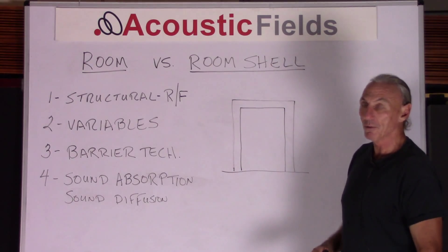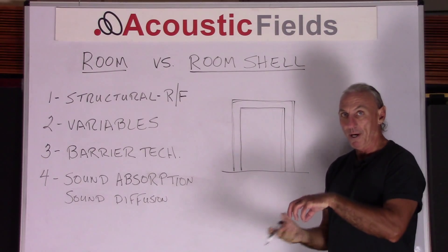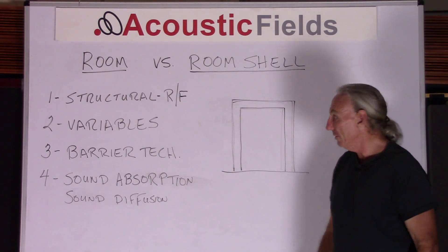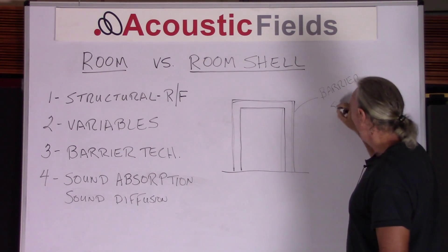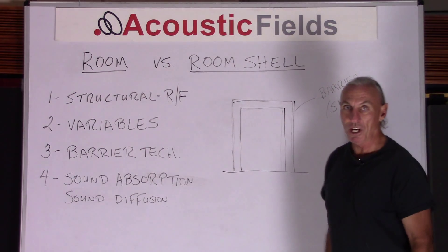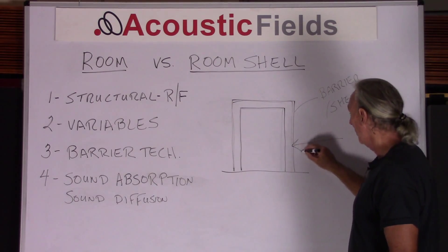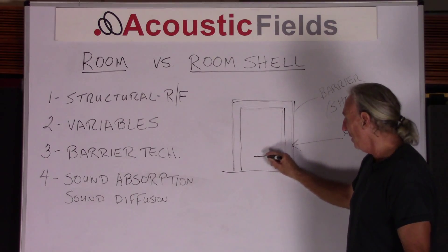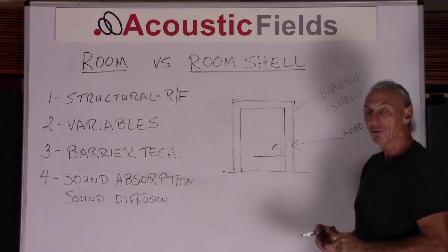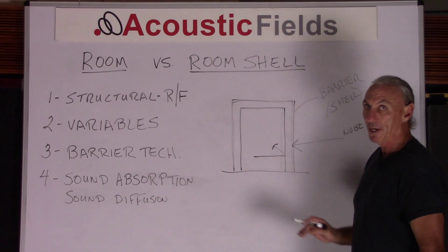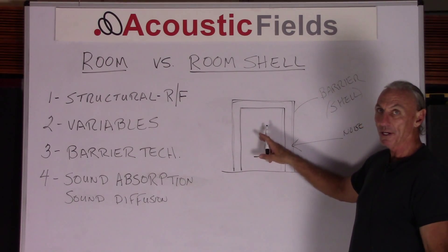In an ideal situation when you're building your room, you're really building a room within a room. It's kind of like that Russian doll concept where you have a small doll inside a bigger doll — it's layers. We have an outside area which is really our barrier, and that's called the shell. The shell keeps noise from entering the room and also keeps noise in the room where it belongs, so it serves two functions with a structural design and capacity it must follow — barrier technology isolating sounds outside from getting in, and sounds inside from getting out.